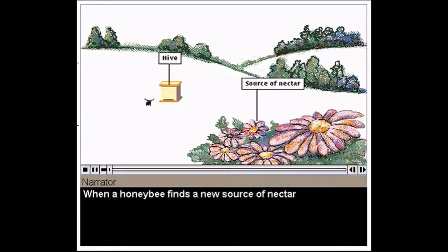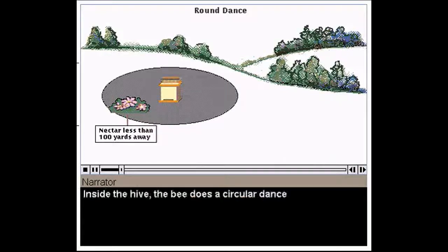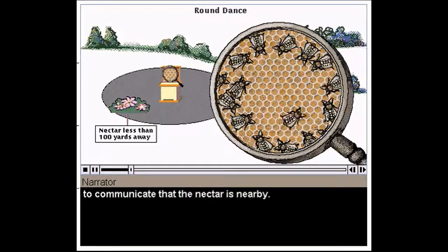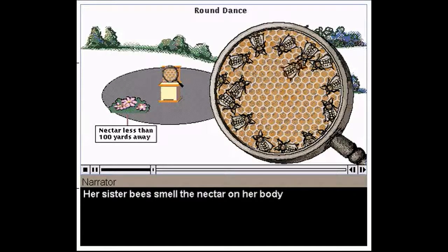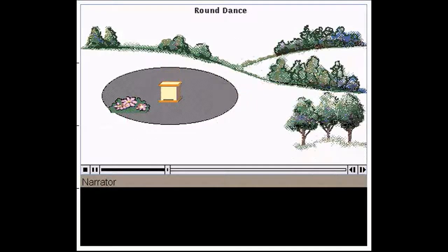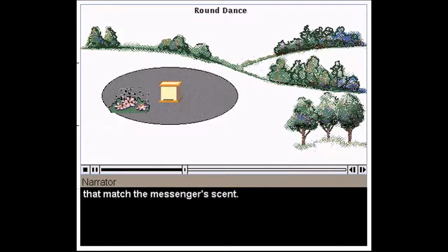When a honeybee finds a new source of nectar, she returns to her hive to communicate the exact location of the nectar to the other bees. Inside the hive, the bee does a circular dance to communicate that the nectar is nearby. Her sister bees smell the nectar on her body and also join in the dance. Then, they fly close to the hive until they find the flowers that match the messenger's scent.